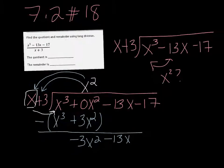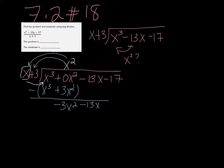From here, you're just repeating the process. Alright, so how many times does x go into negative 3x squared? Well, that would be minus 3x times.